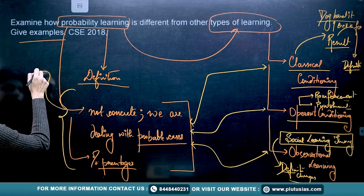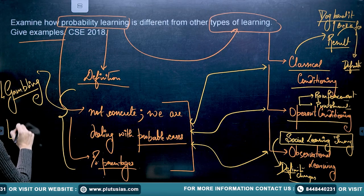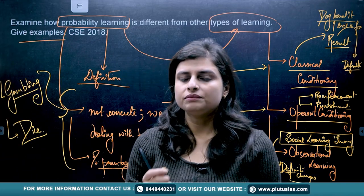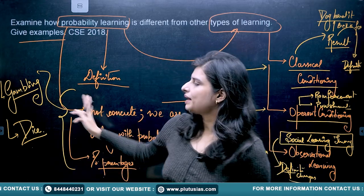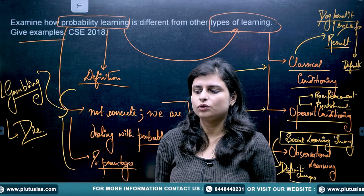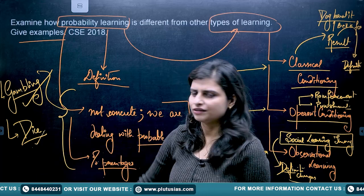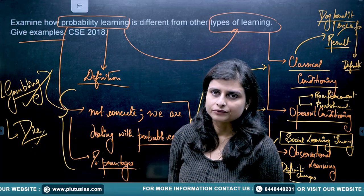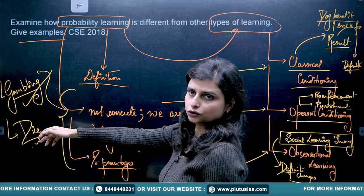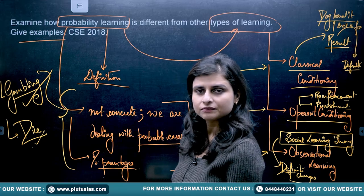Now, examples of probability learning: one example is gambling, and another is games of dice. In gambling, we are dealing with probable cases — for example, the person might through calculation consider the probability of a certain color coming up in the result. So gambling and games of dice are cases of probability learning. That is how you relate probability learning to classical, operant, and observational learning, and you can give many more examples.